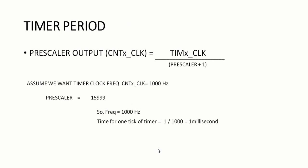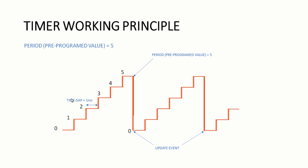If the timer frequency is 1000 Hz, the time for one tick of the timer — that is the time period — can be found by inverting the frequency value. That is 1 divided by 1000, which gives 1 millisecond. So 1 millisecond is the time taken for the timer for one tick, which is the time gap between counts. This time gap is 1 millisecond if the timer is running at 1 kHz.